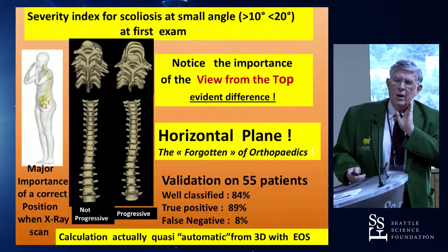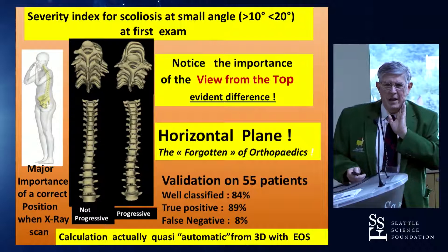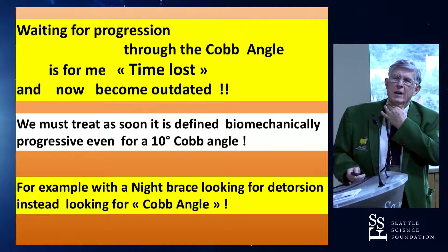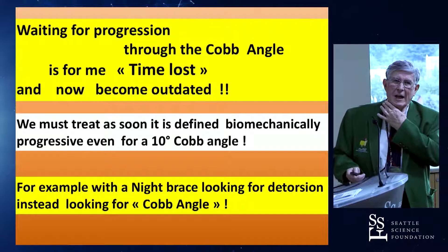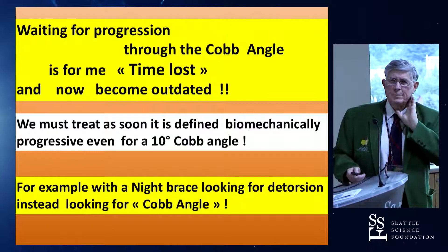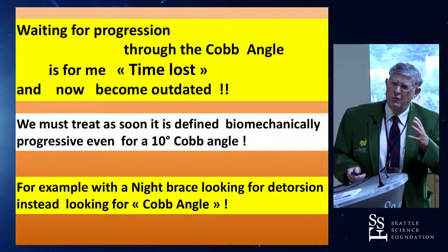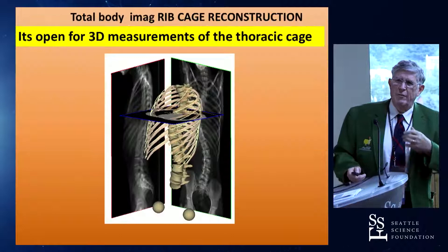I think that the horizontal plane is a forgotten plane of orthopedics. The calculation is actually quasi-automatic from the 3D with the total body imaging. In my mind, waiting for progression through the Cobb angle is time lost. It must be outdated. We must treat as soon as it is defined biomechanically progressive, even for a 10-degree Cobb angle — for example, with a night brace, looking for detorsion, not looking for the Cobb angle. The torsion is the basis of the deformity of scoliosis.